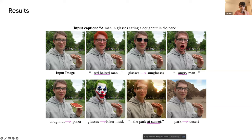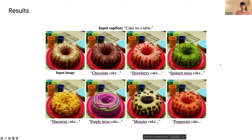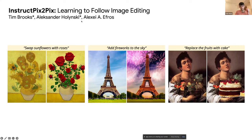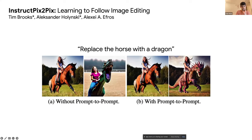We start from the image on the top left, apply null text inversion, and then we can change the text prompt that described this image to edit it the same way as before. Here are more examples. There's also a follow-up work — not by our team — that uses Prompt-to-Prompt to generate synthetic paired images and trains InstructPix2Pix. Using a large dataset of input image, output image, and text instruction, they fine-tune the diffusion model to directly apply editing on real images, which is very cool.